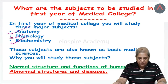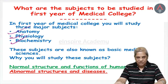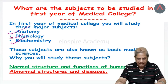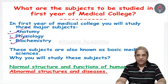Another subject in first MBBS is physiology, in which you will learn how the various systems of the body actually function. So anatomy deals only with structure, while physiology deals with the functions of the various systems of the body. For example, you will learn how the heart pumps blood into the arterial system and how this blood returns back, and similarly in the excretory system, how the kidneys are functioning.